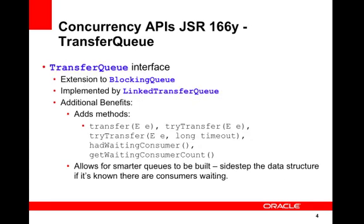Under the concurrency APIs in JSR 166y, transfer queues: a transfer queue is a blocking queue in which producers may wait for consumers to receive elements. A transfer queue may be useful, for example, in message passing applications, where producers sometimes — using method transfer — wait for recipients of elements via consumers invoking take or poll, while at other times enqueue elements via method put without waiting for receipt.